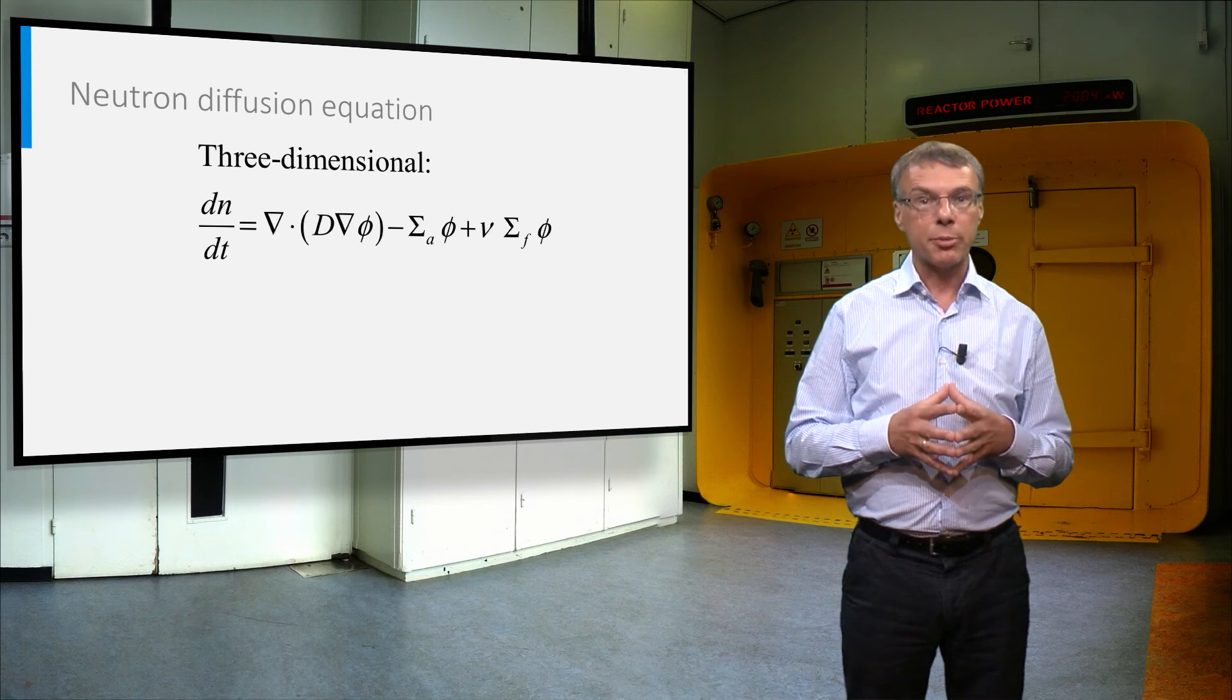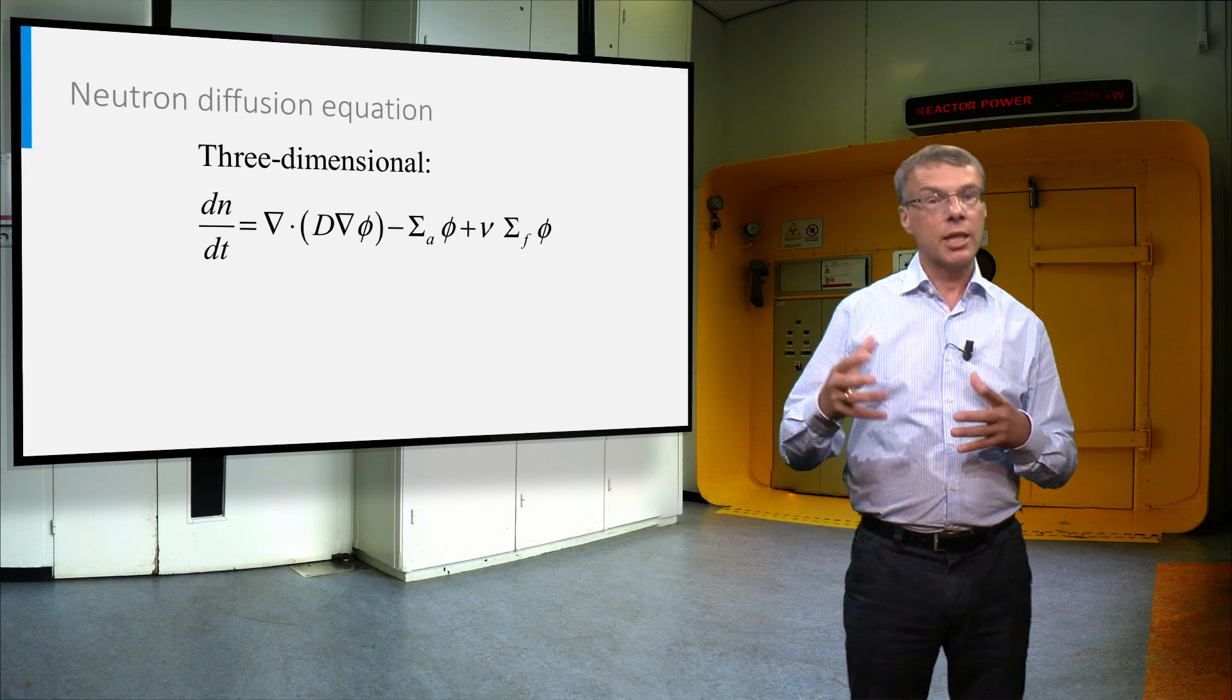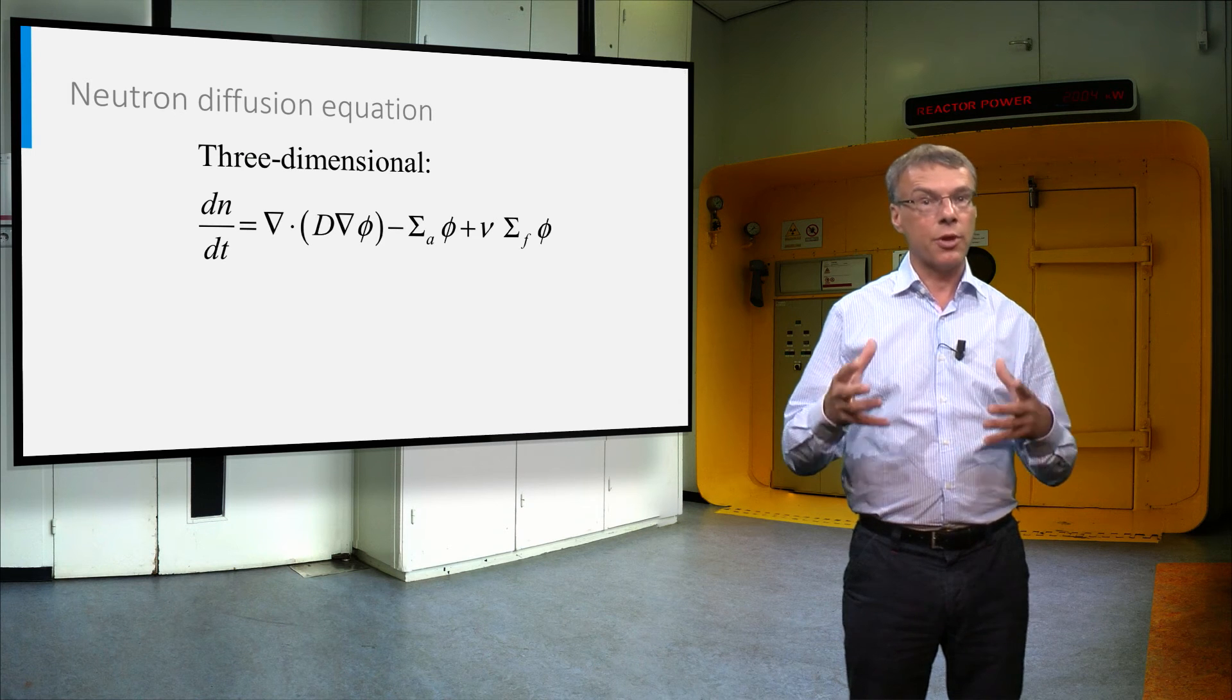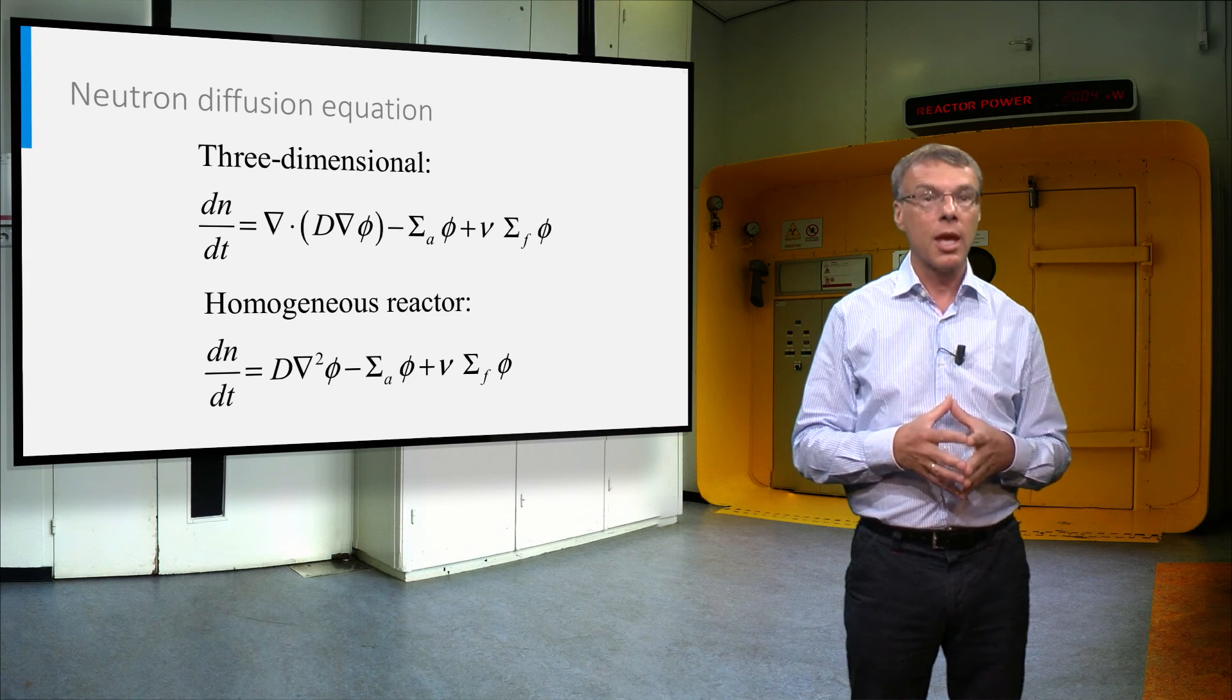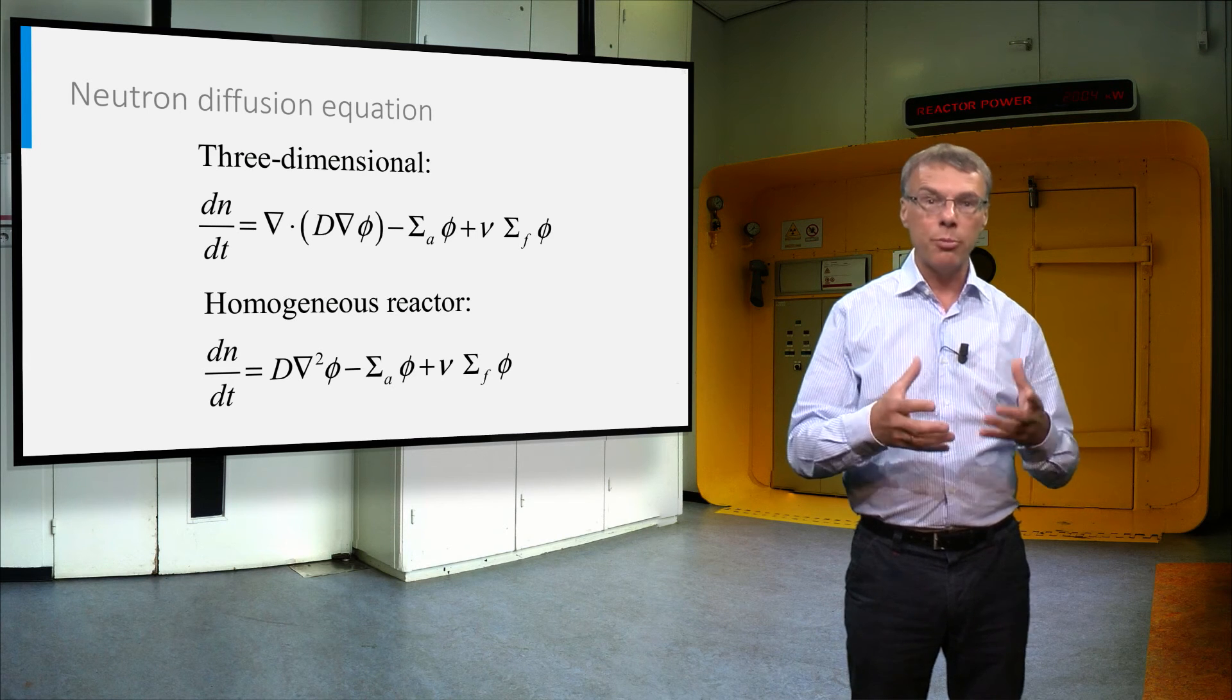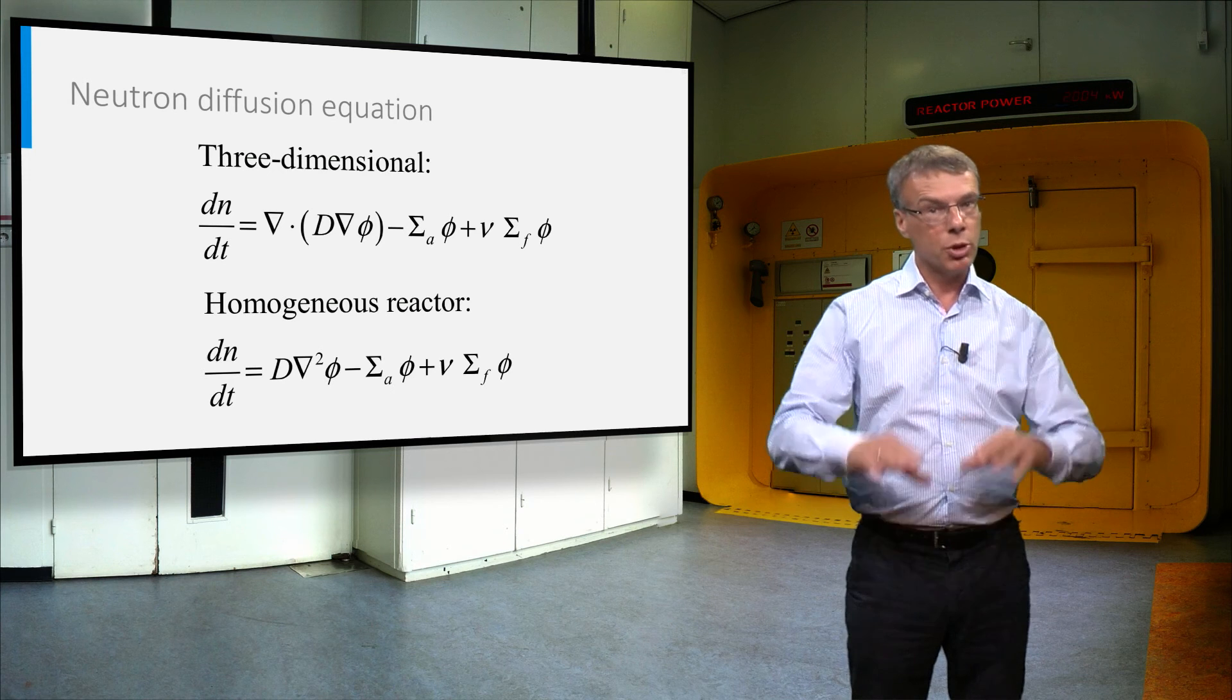This equation shows the same expression for the three-dimensional case, where d phi dx is now replaced by the NABLA operator. NABLA stands for the three-dimensional derivative in all three directions, x, y and z. If we would have a homogeneous reactor core, the diffusion coefficient would not be spatially dependent anymore, and the equation would become as in the bottom line.